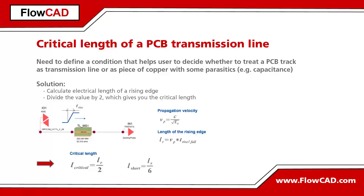When discussing the impedance of transmission lines, the theory assumes an infinite length, which is not very helpful in the PCB context. On one hand, we know that we have to deal with delays and reflections on long tracks. On the other hand, it's quite obvious that short tracks cause almost no delay. We need to define a condition that helps us decide whether a track with a given length has to be considered as a transmission line or a simple load with parasitic elements.